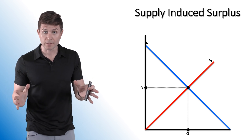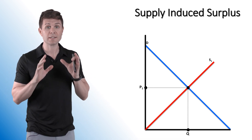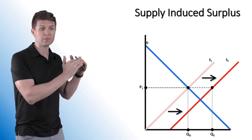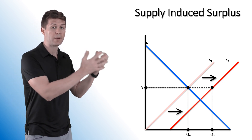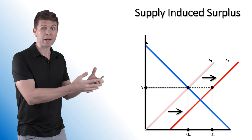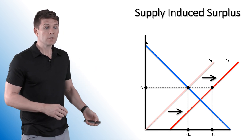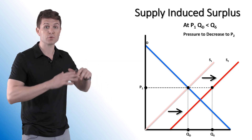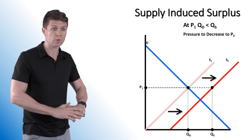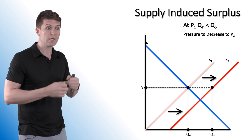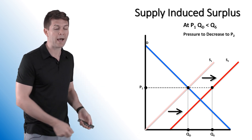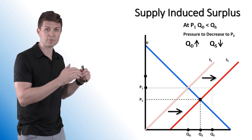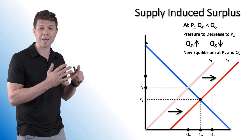Just like with the demand increase, an increase in supply can initially cause a surplus. We see our right-shifting supply curve, and if we keep price exactly where it is, suppliers are going to want to supply more than the market needs and consumers are not going to want to buy as much at that existing price. So we end up with a quantity demanded that is lower than quantity supplied, causing a surplus. There's pressure to decrease the price because producers want to get rid of their extra product. As that price drops, quantity demanded increases, quantity supplied decreases, and we get back to our new equilibrium at P2 and Q2.